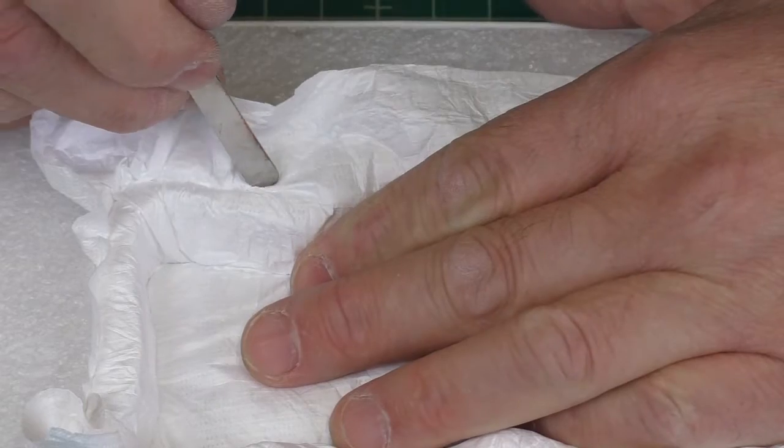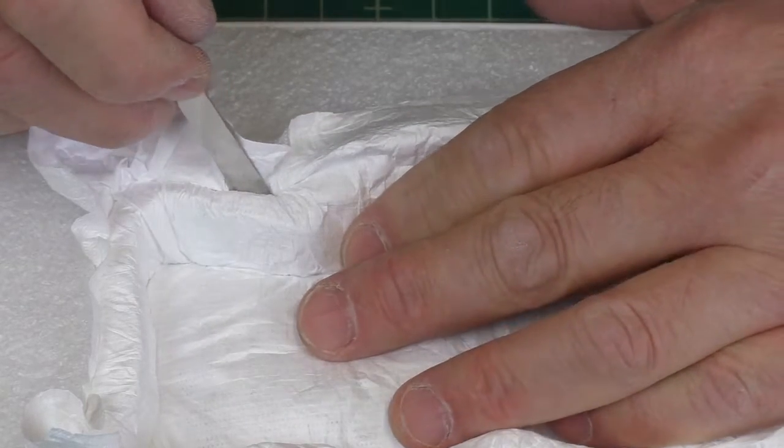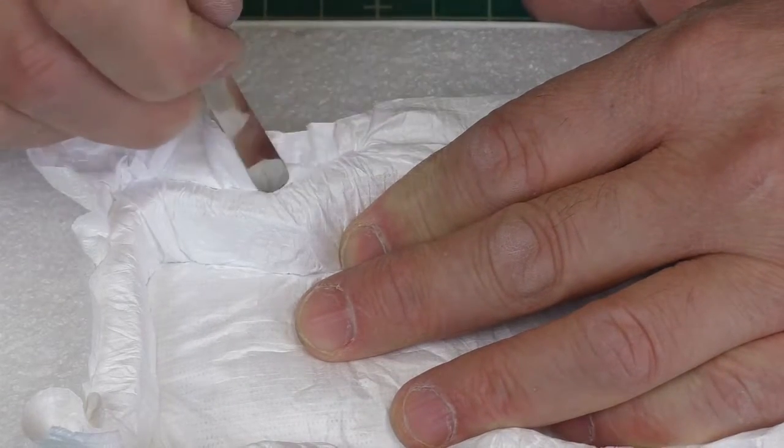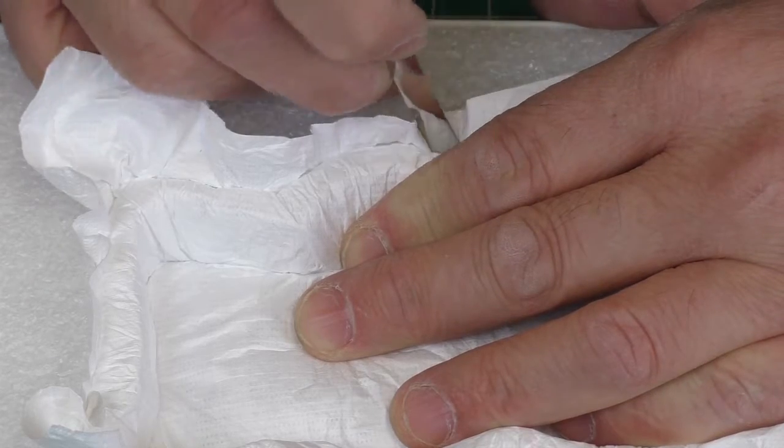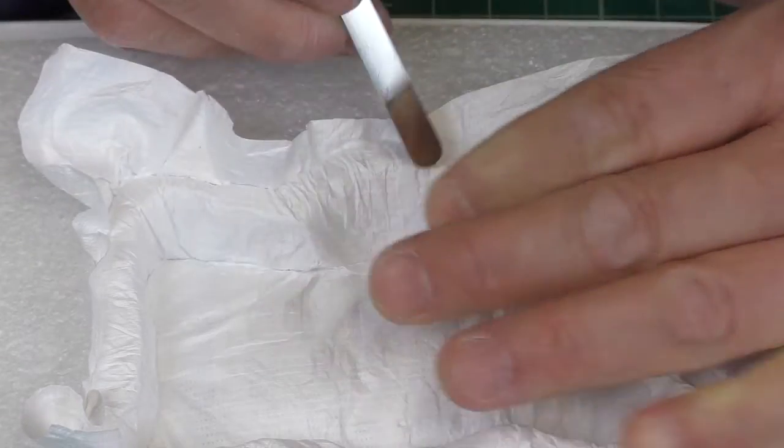Then tuck the Tyvek into the slit around the rim. As you do this, be careful not to pull out the inner tuck. Pressing the Tyvek to the bottom of the cavity will help.